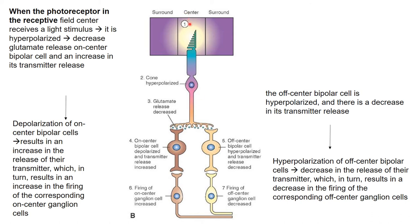With light in the center of the receptive field hyperpolarizing photoreceptors, off-center bipolar cells hyperpolarize, decreasing glutamate release and reducing off-center ganglion cell firing. Simultaneously, on-center bipolar cells depolarize due to activation of cyclic GMP-gated ion channels, increasing glutamate which binds to AMPA and NMDA receptors on on-center ganglion cells, increasing their firing rate. In the presence of light in the center, on-center ganglion cells increase their rate of discharge while off-center ganglion cell firing decreases.